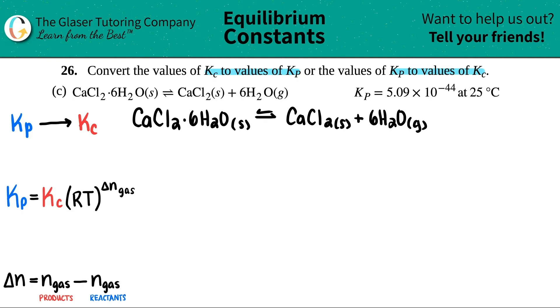So let's work from left to right and write down everything that we know. They gave us a Kp value. They told us that that was 5.09 times 10 to the negative 44. Now, we want to find out the Kc value, so I'm just going to say that's the X value. I'm solving for X.